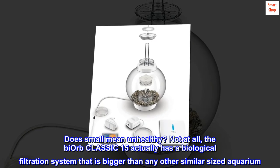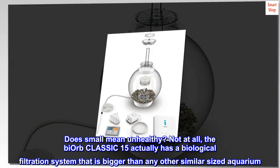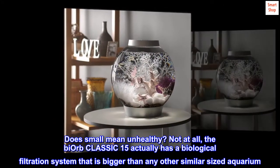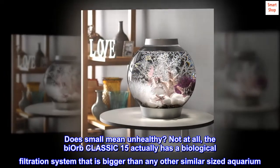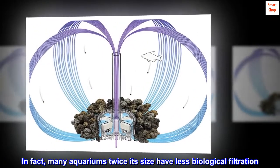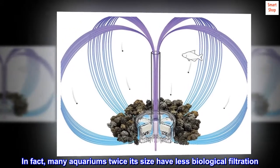Does small mean unhealthy? Not at all. For example, the bi-orb Classic 15 actually has a biological filtration system that is bigger than any other similar-sized aquarium. In fact, many aquariums twice its size have less biological filtration.